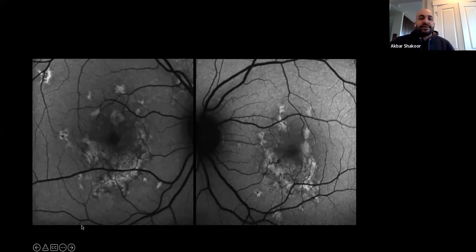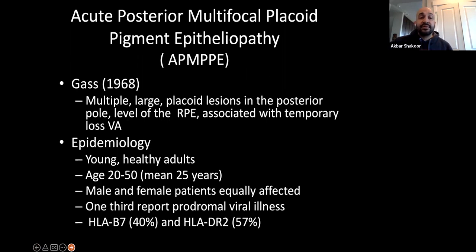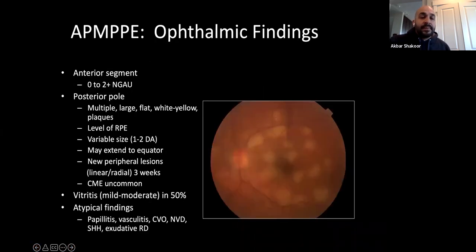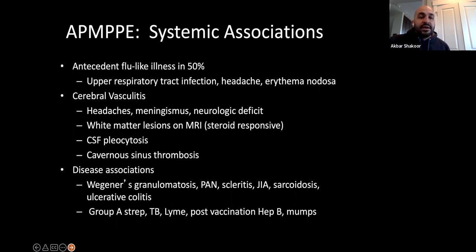For your OCAPs, APMPPE is self-limiting and gets better by itself, but in real life you probably want to treat these patients. APMPPE was described in the late 1960s — young healthy adults, could be male or female. One-third have a prodromal viral illness. There's an HLA predilection — HLA-B7 and DR2 — though it's completely useless clinically. There's rapid onset of blurred vision, bilateral and asymmetric, and up to 10% of patients with APMPPE have cerebral vasculitis.